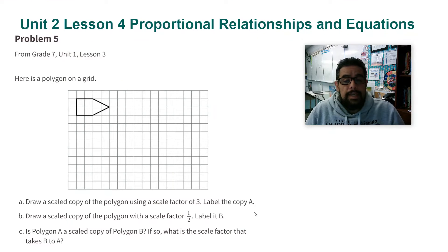Alright ladies and gentlemen, Mr. Uruthia here. I'm going over Unit 2 Lesson 4 Practice, problem number 5. Here is a polygon on a grid. Part A: Draw a scaled copy of the polygon using a scale factor of 3. Label the copy A.